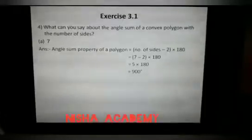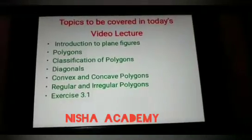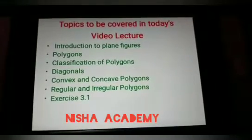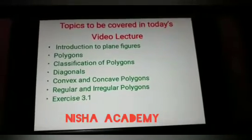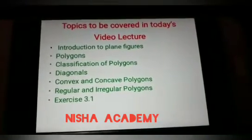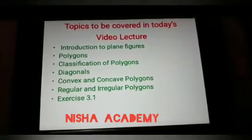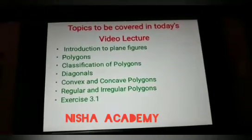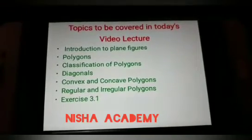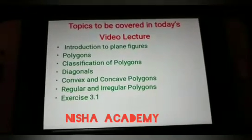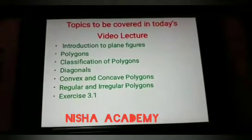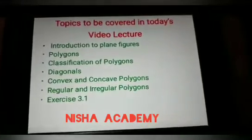So in today's video lecture we covered the following points: Introduction to plane figures, that means what do you mean by plane figures, simple curve, closed curve, open curve. Then what do you mean by polygon—polygon means closed curve made up of line segments. Classification of polygons on the basis of number of sides, diagonals meaning, and types of polygons: convex, concave, regular, and irregular.